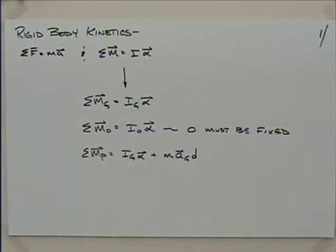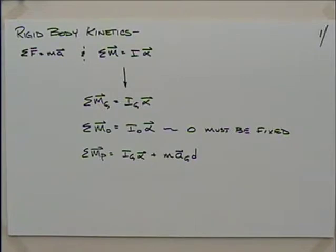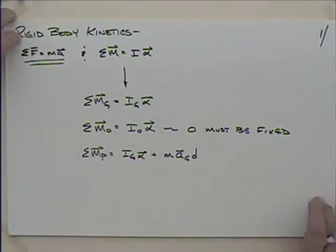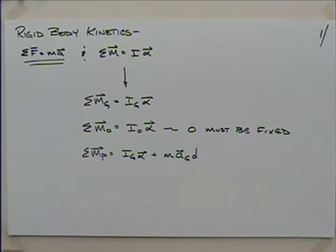We continue to work in rigid body kinematics in two dimensions. The mechanicals will probably go on to an advanced class where they'll do this in three dimensions, but we're mainly doing plane kinetics. We've used the equation quite a bit that force equals mass times acceleration. Then we went to rigid body kinetics with the new equation that the sum of moments equals I times alpha, where I is the mass moment of inertia.